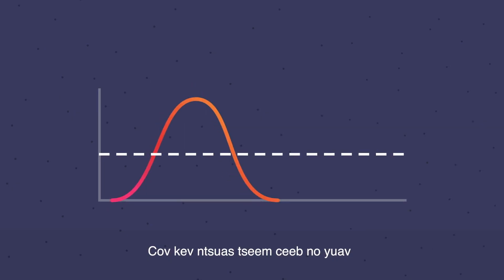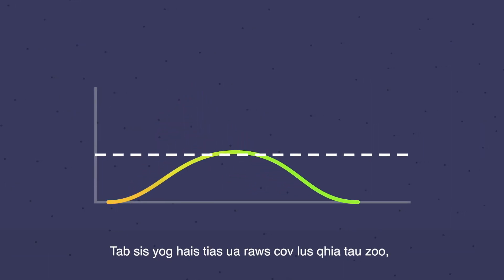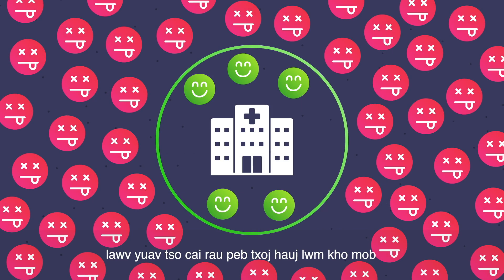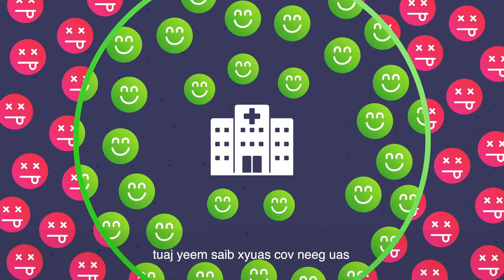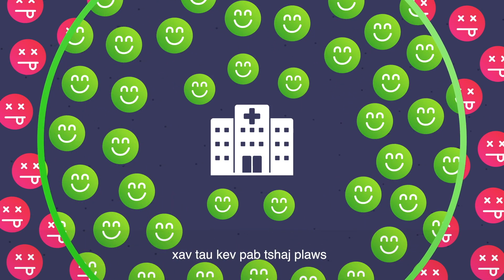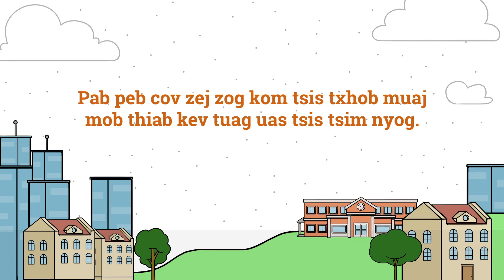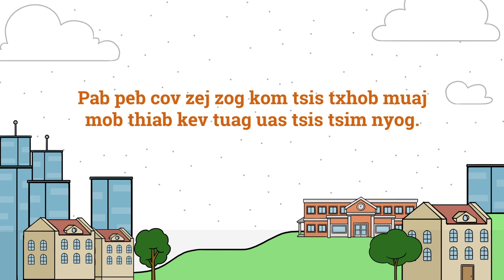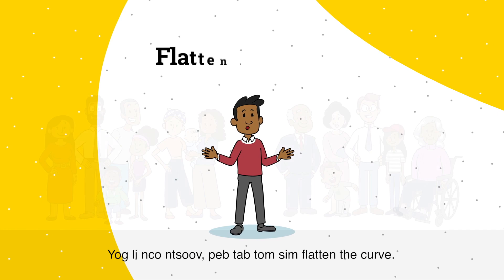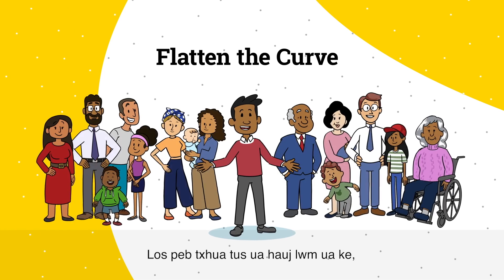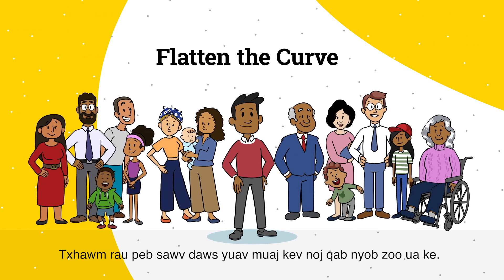These important measures will not completely stop the virus, but if implemented effectively, they will allow our healthcare system to be able to take care of those who need it most, and help our communities avoid unnecessary sickness and death. So remember, we are trying to flatten the curve. Let's all work together, so we can all be healthy together.